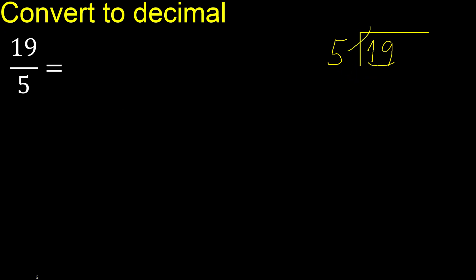5 — multiply by which number is nearest to 19 but not greater. Multiply by 4: 20 — 20 is greater. Multiply by 3: 15 — ok, 15 is not greater. 19 minus 15 is 4.